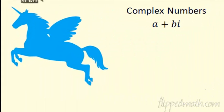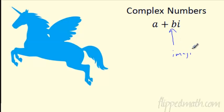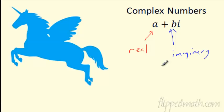We talked imaginary numbers — let's talk complex numbers. What are complex numbers? This is the general form: a plus bi. The b with the i represents the imaginary part of a complex number, and the a is going to be the real part. So a complex number is part real, part imaginary.